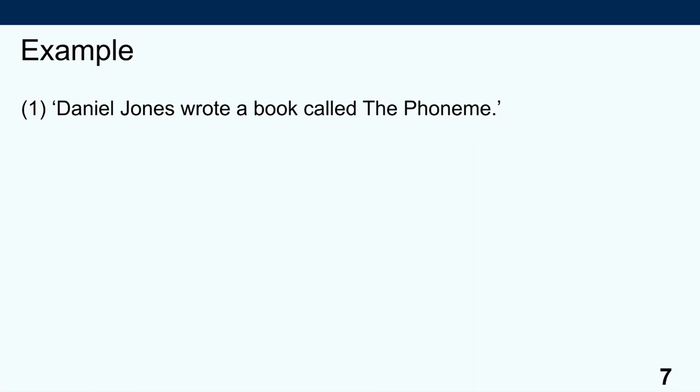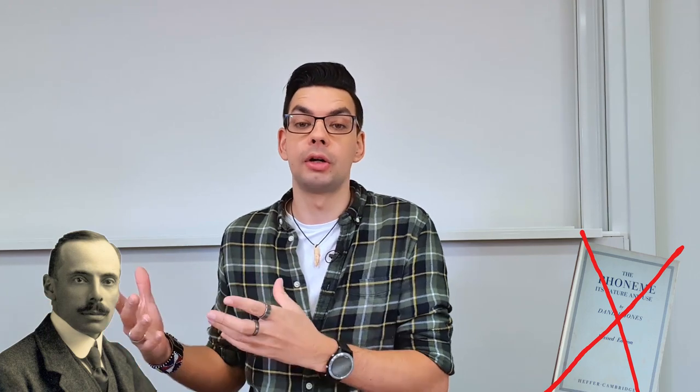Take the sentence 'Daniel Jones wrote a book called The Phoneme.' You may or may not know whether that sentence is in fact true. But what you do know is what the world would have to look like for it to be true: there would have to be an individual called Daniel Jones, a book called The Phoneme, and the author of that book would have to be that Daniel Jones. If those conditions are met, then you know the sentence is true.